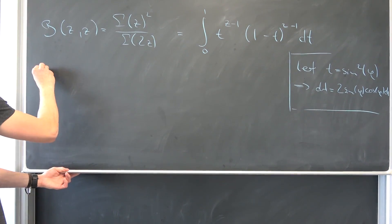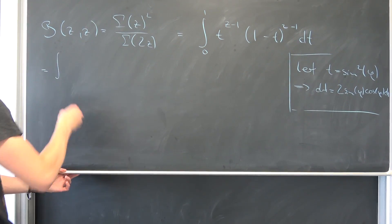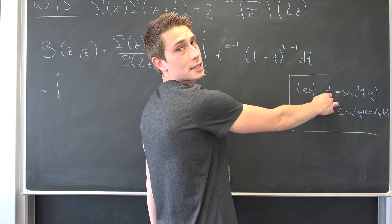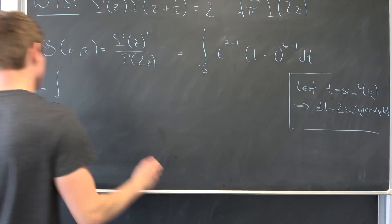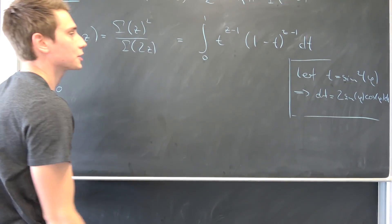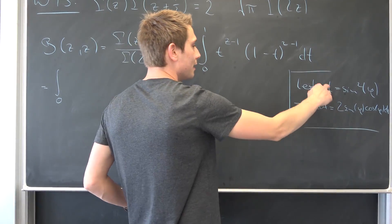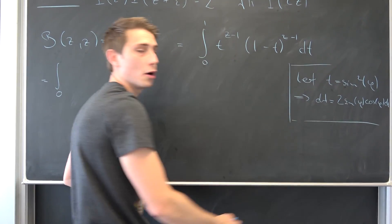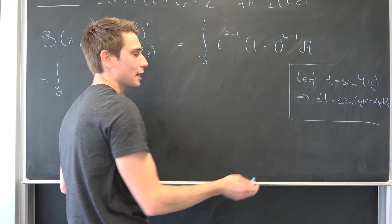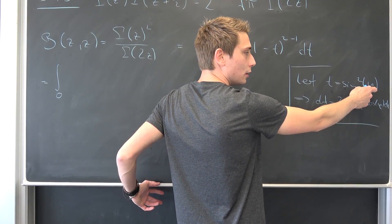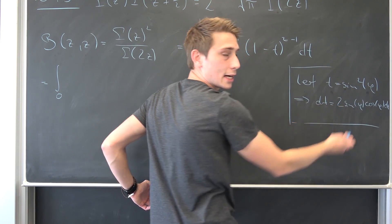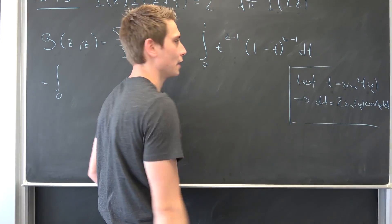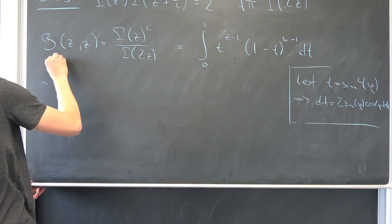We can plug this into the integral. We are going to get an integral running from — when is sine squared going to be equal to 0? When sine equals 0. We take the principal branch. And when is sine squared equal to 1? When sine of pi over 2 equals 1, so the upper bound is pi over 2.